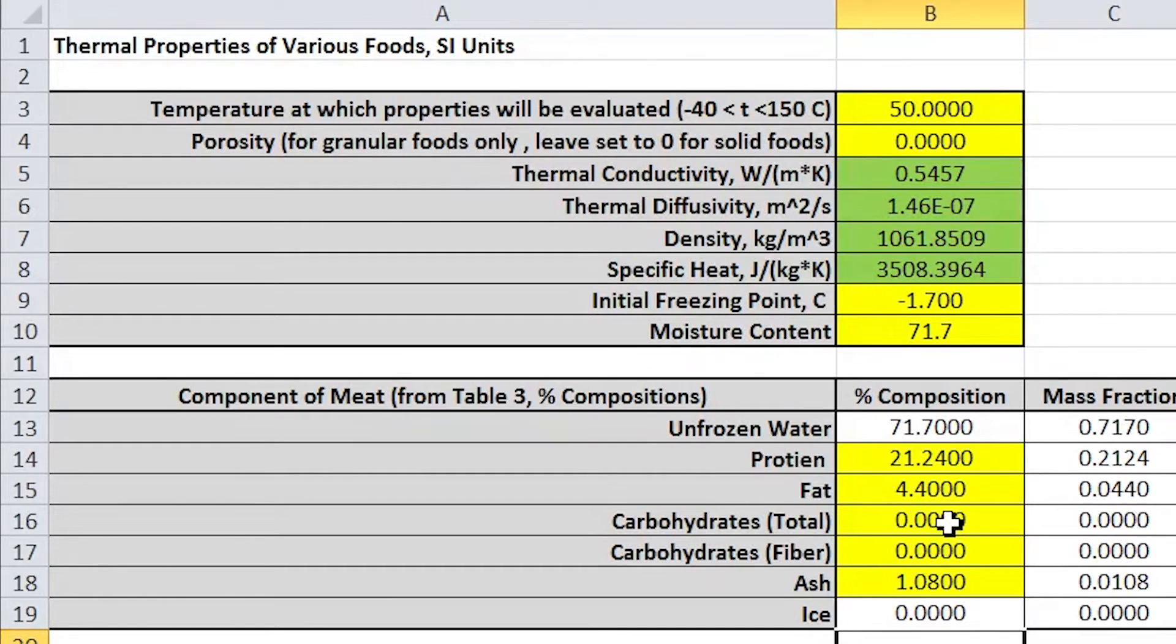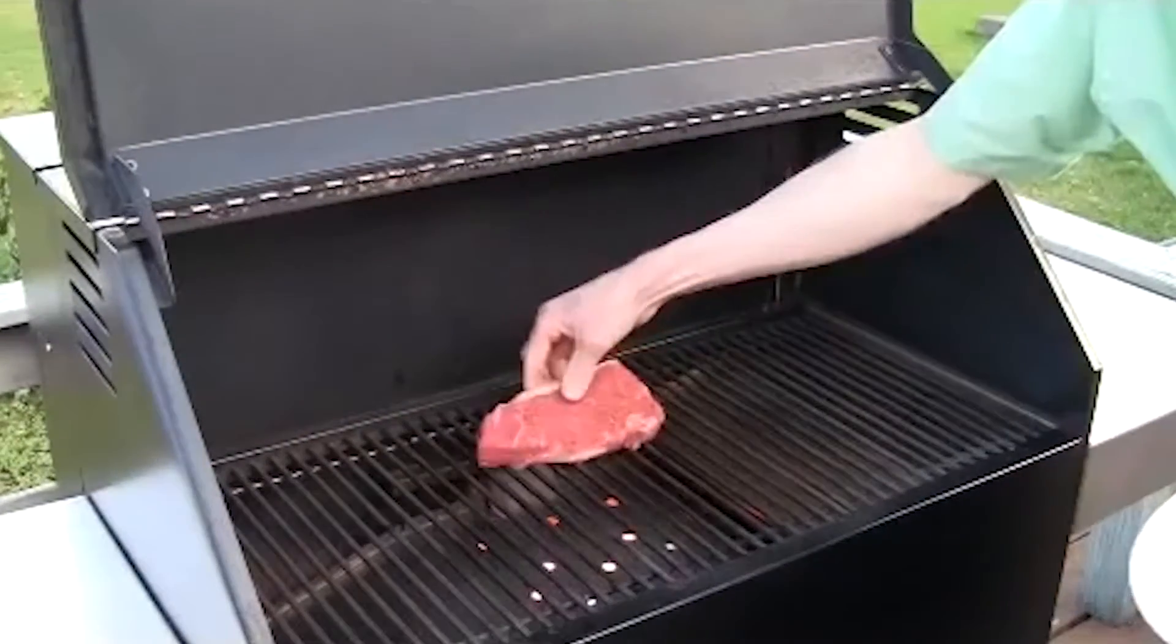Given these values, the model calculates our desired properties of the lean beef sirloin at 50 degrees Celsius. Now, this is great, but it's only part of the story.